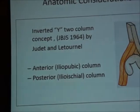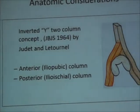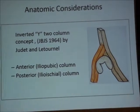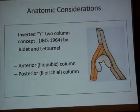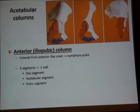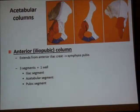Back again to the two-column concept of Judet and Letournel. It is the basis for understanding the acetabular injuries and fractures. We have the anterior column and the posterior column. The anterior column has three segments: the iliac segment, the acetabular segment, and the pubic segment.